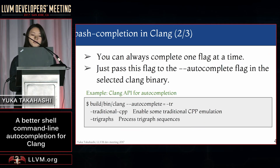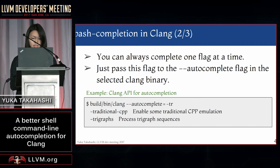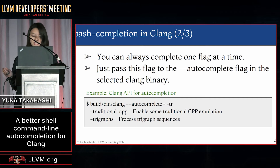You can only complete one flag at a time. So, if you want to use this API, you have to select the flag that the user is currently typing. Then, you can just pass this flag to the autocomplete flag in the selected Clang binary. In this example, all flags starting with minus tr are displayed with their descriptions.